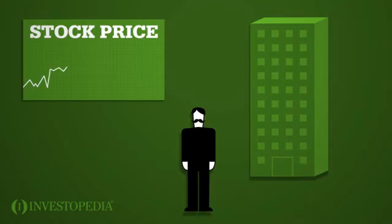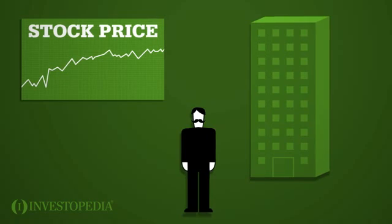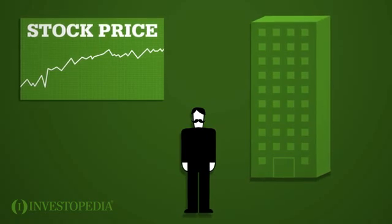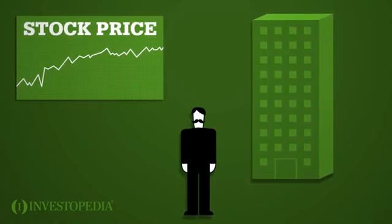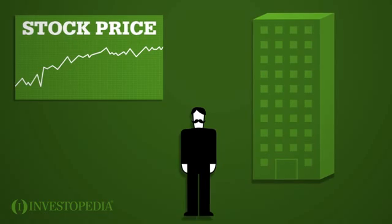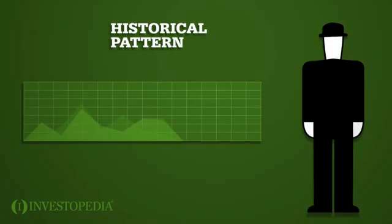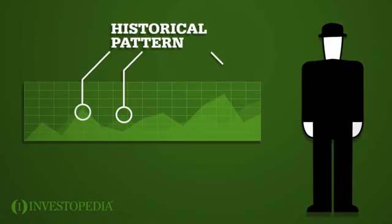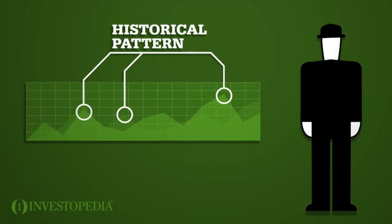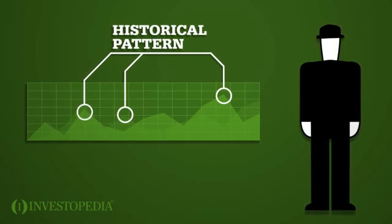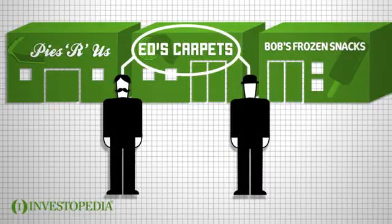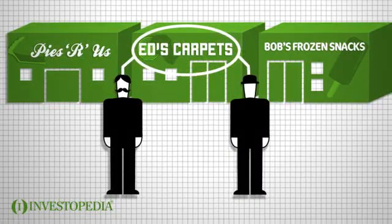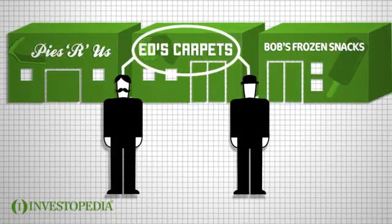Tom will base his decision on the company itself, and his belief that it is, or soon will be, worth more than its stock price suggests. Joe will buy a stock because historical trends suggest the price is likely to go up, not because of anything he sees in the company itself. In the end, Tom and Joe may choose to invest in the same store, but their reasons for investing will be very different.